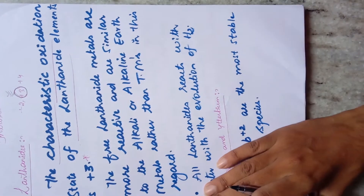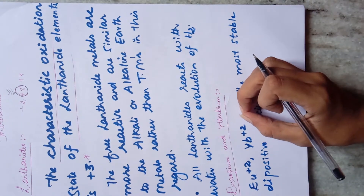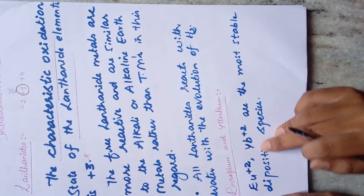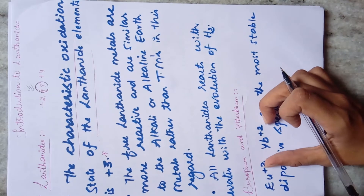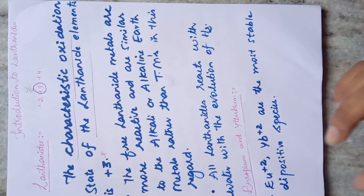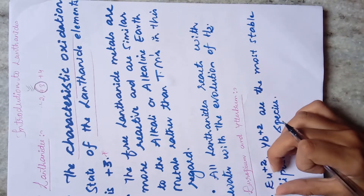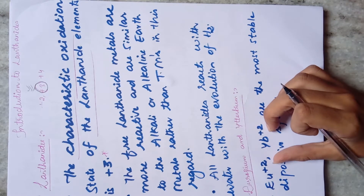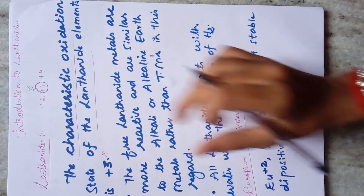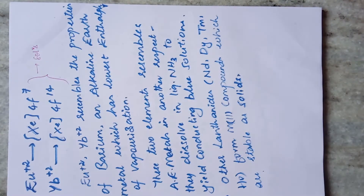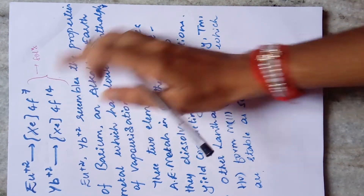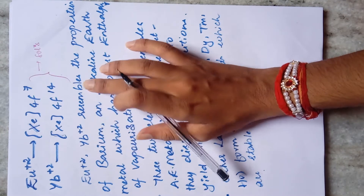Although the characteristic oxidation state is +3, europium and ytterbium possess +2 as their most stable oxidation state. This is because the half-filled (f7) and fully-filled (f14) configurations of Eu²⁺ and Yb²⁺ make them more stable in +2 rather than +3.